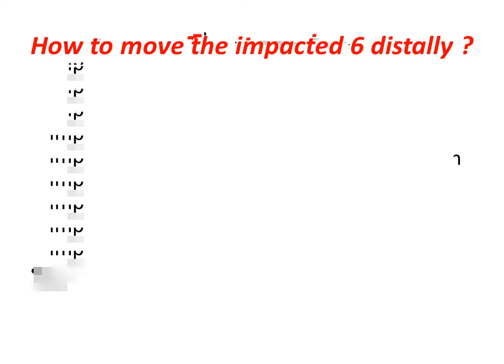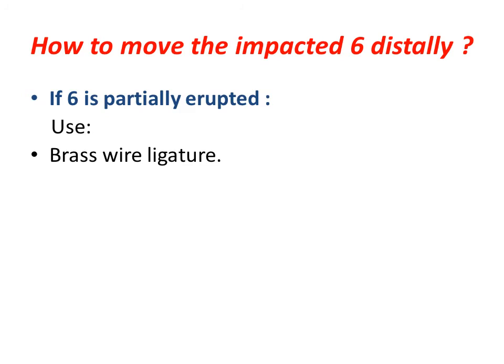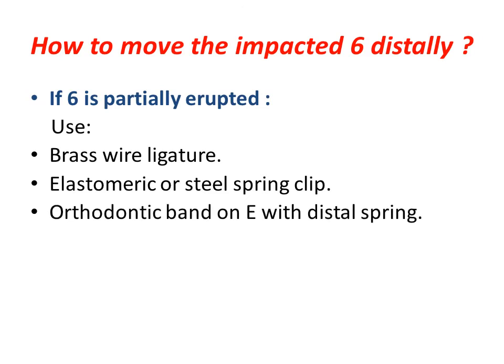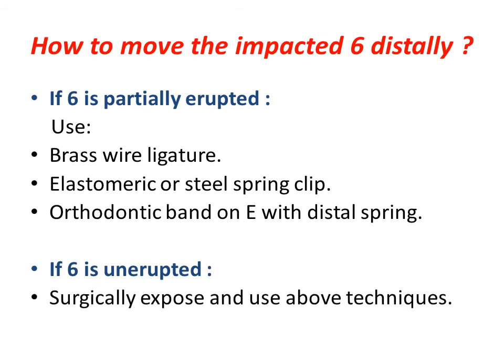To move the impacted tooth distally, if the sixth is partially erupted — meaning part of its crown is visible clinically — we will use one of these methods: brass wire ligature, elastomeric or steel spring clip, or an orthodontic band on the E with a distal spring. If the sixth is unerupted, we will need to surgically expose it and use one of the above techniques.